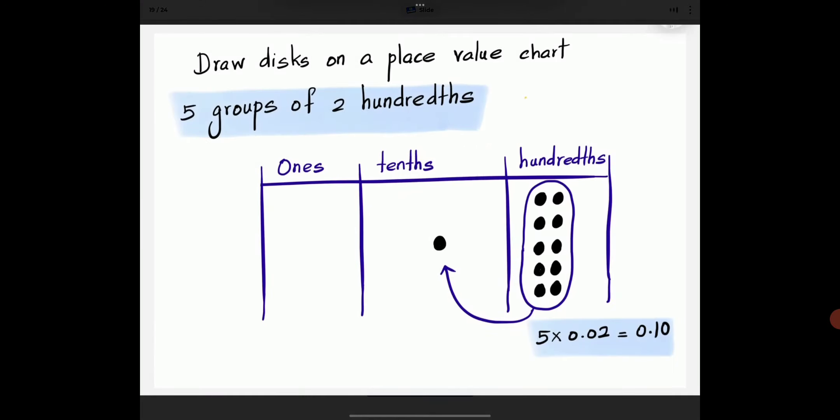Draw 5 groups of 2 tenths on a place value chart. Draw 5 groups of 2 hundredths in a place value chart. You should bundle 10 disks from the hundredths column to the tenths column and it becomes 1 tenth.